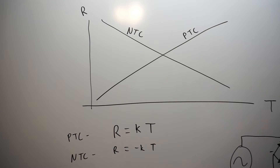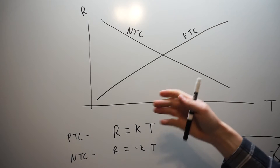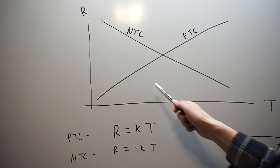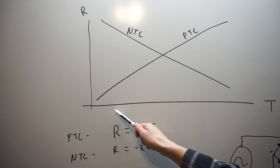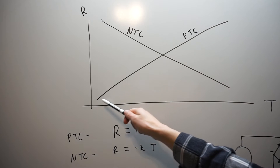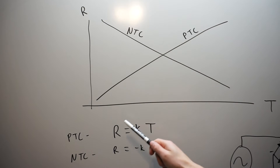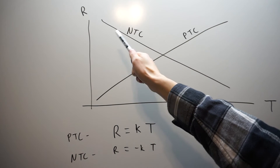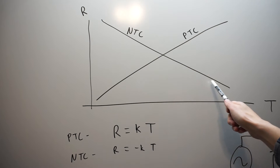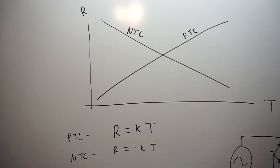Typically they'll give you this curve in a datasheet, or some type of equation you can use to see how a thermistor will respond to temperature. They'll often give you a fixed point temperature — at 25 degrees C, this is its nominal resistance — and then it will deviate from that based on some formula or curve. A PTC, as your temperature increases, has a positive temperature coefficient so its resistance goes up. An NTC is the exact opposite — it starts at a high resistance and as temperature goes up, the resistance drops down, though it's typically not linear like this at all.